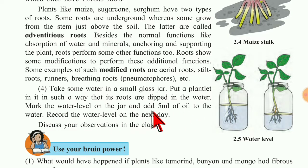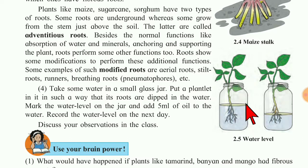Mark the water level on the jar, then add 5 ml of oil to the water. Record the water level on the next day and observe. What will happen? The water level will decrease — because the normal function of the root is to absorb water and minerals, which is why the water level decreased.